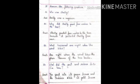The first question is who was Shetty? So, Shetty was a magician. The next question is why did Shetty grant four wishes to the tree? As I told you in the recap, Shetty granted four wishes to the tree because it protected Shetty from rain.